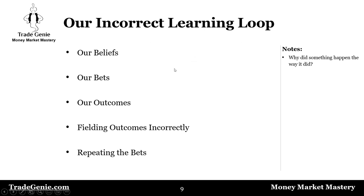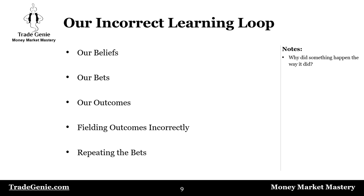This is the incorrect learning loop — what most traders do. During the day they have certain beliefs, they bet based on those beliefs, the outcome comes, and then they field the outcome incorrectly. If it's a good outcome, they pat themselves on the back. If it's a bad one, they blame someone else. They field the outcome incorrectly and just repeat the bets — not improving anything.